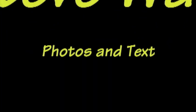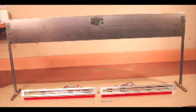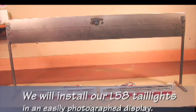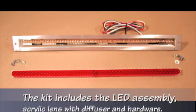Installing flush mounted taillights. We will install our L58 taillights in an easily photographed display. The kit includes the LED assembly, acrylic lens with diffuser and hardware.